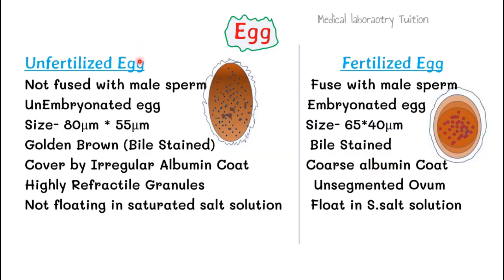There are two types of eggs: unfertilized and fertilized. Unfertilized eggs are not fused with male sperm, so they do not contain an embryo. They are slightly longer than fertilized eggs — 80 microns in length and 55 microns in width. Very importantly, both types of eggs are golden brown due to bile staining. The unfertilized egg has an irregular albumin coat covering, and inside we can see refractile granules that are very shiny under the microscope.